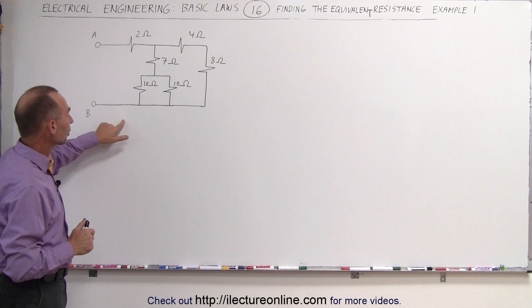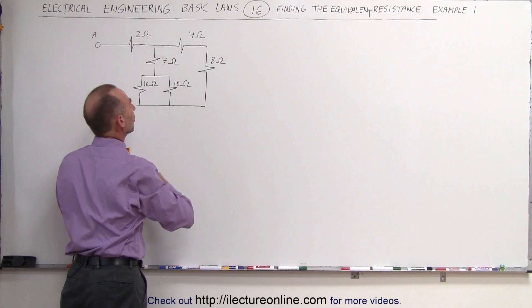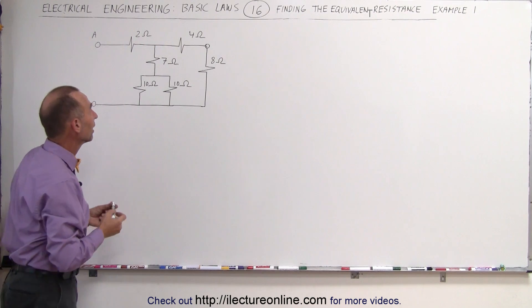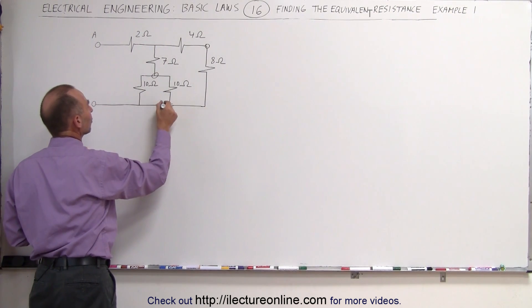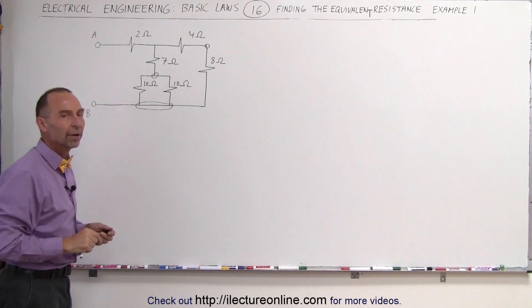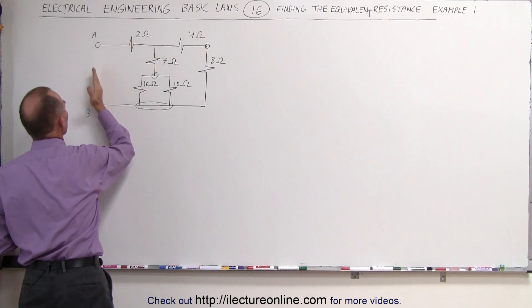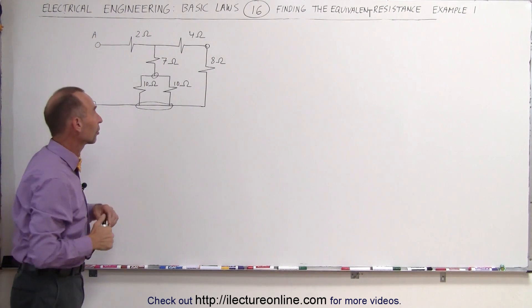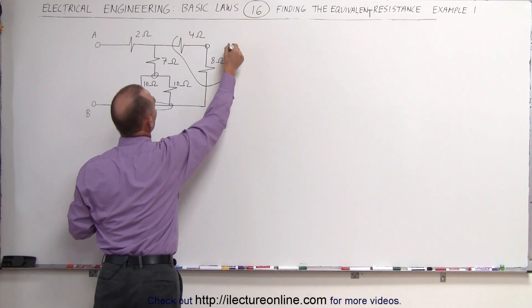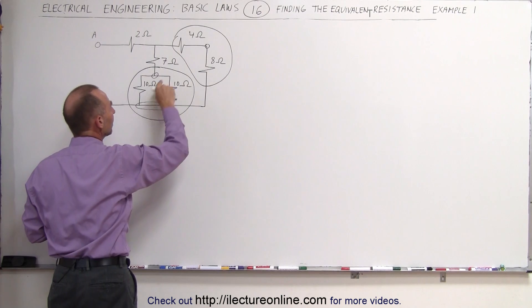Take a look at this circuit. Notice that the four ohm resistor and the eight ohm resistor must be in series because they share a singular node that is not shared by any other resistors. That makes the four and eight ohms in series. On each end, the two other resistors share a common node — that puts those two resistors in parallel. We're going to combine those two resistors in series and those two resistors in parallel at the same time.